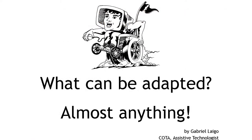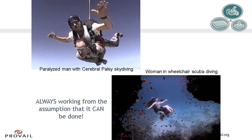What can be adapted? Almost anything. A couple of examples are this paralyzed man on the left with cerebral palsy having the opportunity to go skydiving with little support. And at the other end of the spectrum, the woman seen here on the right is scuba diving independently in her adapted wheelchair. Again, always working from the assumption that it can be done.